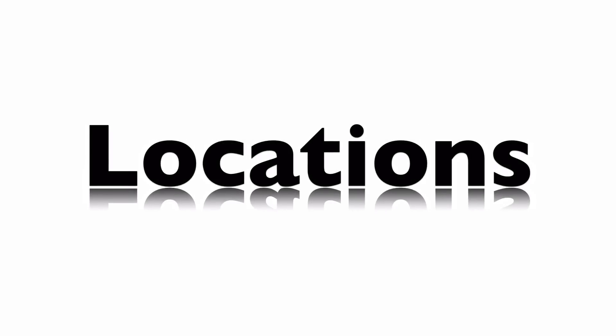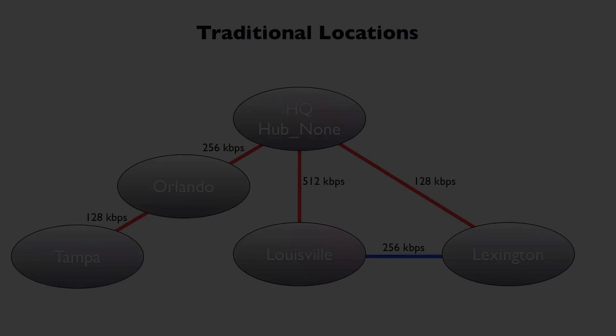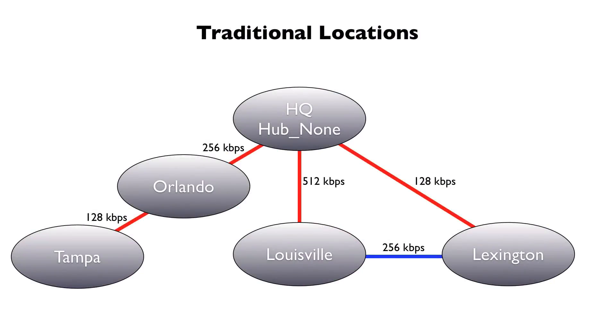One of the biggest changes we see in Communications Manager version 9 is the change to locations. Locations has been around for a long time in Communications Manager — it's a CAC, a call admission control mechanism, to make sure that we don't consume too much bandwidth across the IP WAN. But the way locations were traditionally implemented, it really wasn't perfect.